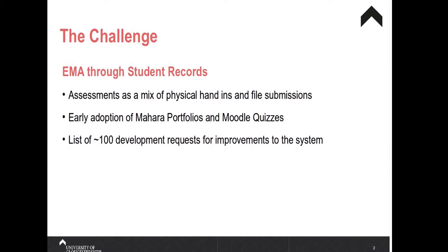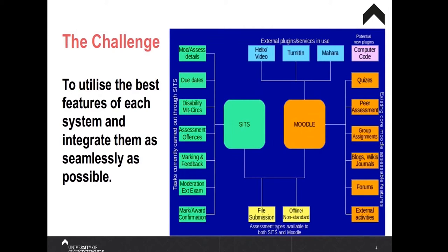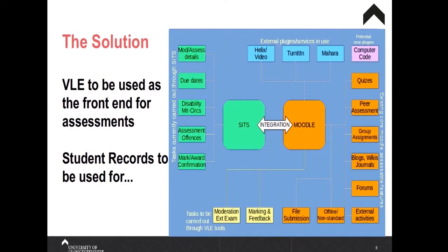The challenge: Gloucestershire has been using their student record system for management of assessment for about the last five or six years. Students were submitting files on there, and any other assessment was done manually. About two and a half years ago when I arrived at the university, they had a list from staff of about a hundred developments they wanted done to the CMA system. I took one look at this and said, well, Moodle will do about 80 or 90 of those out of the box, so why aren't we using Moodle for the front end?